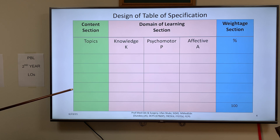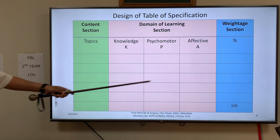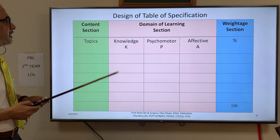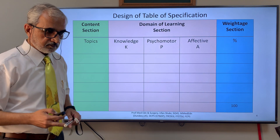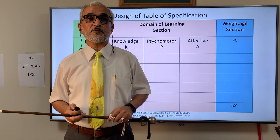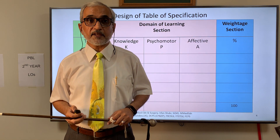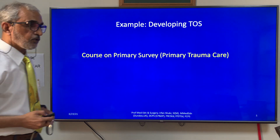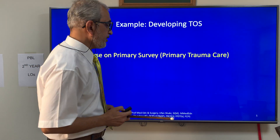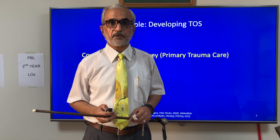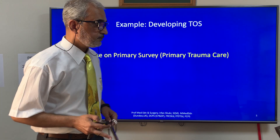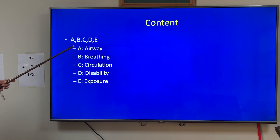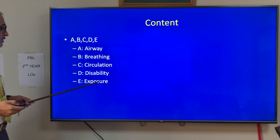This is a design of the table of specification. I have color-coded it: the content section is green, the weighted section is blue, and the domain of learning section is pink. Now I will explain how to develop a table of specification by taking an example. Let's say we have to develop a course on primary survey, which is a component of primary trauma care. The content of primary survey is: Airway, Breathing, Circulation, Disability, and Exposure.